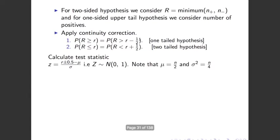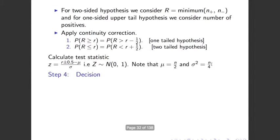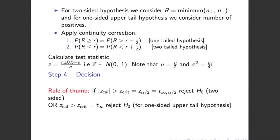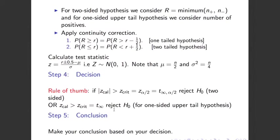We then calculate the test statistic z, which equals r plus or minus 0.5 (plus for two-tail, minus for one-tail upper), minus the mean n over 2, divided by sigma which is the square root of n over 4. Then we make our decision: if the absolute value of the test statistic is greater than the critical value, we reject H0. For a one-sided upper-tail test, we use that rejection criterion — the same rule of thumb we used in Lecture A16. We then make our conclusion based on our decision.